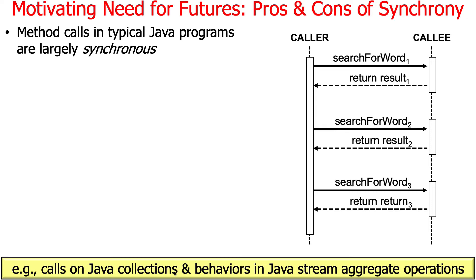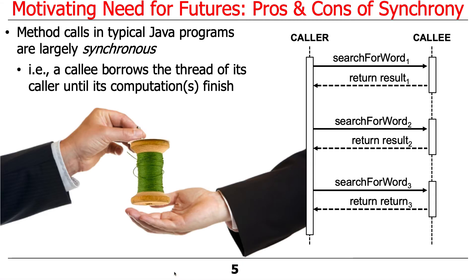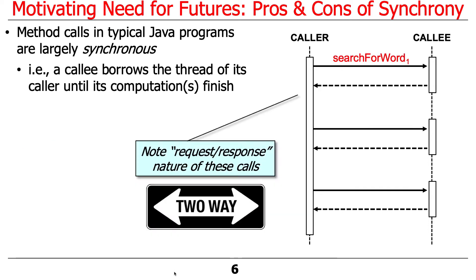What happens with a synchronous approach is a caller makes a call, and the callee borrows the thread of control of the caller until the computation finishes. The callee borrows the thread, and when it's finished, it returns the result. The caller makes another call, the callee borrows the thread of control, returns the result, makes another call, borrows the thread of control, returns the result. It's kind of a request-response style interaction.